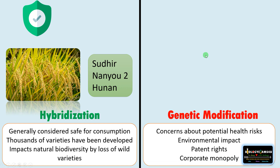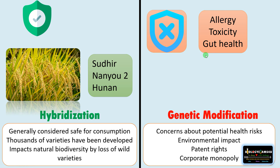Whereas for genetic modification, there are many concerns about potential health risks, including allergic reactions, toxicity, and gut health — specifically how natural gut bacteria respond to genetically modified food. Research is ongoing. There is also environmental impact: how genetically modified crops or organisms interact with other organisms, pollinators, or other varieties, and what happens during cross-pollination is not yet fully known. Most importantly, these are often produced by multinational companies with patent rights, leading to corporate monopoly that adversely affects the prospects of farmers. Many questions are yet to be answered regarding GMOs, and research is ongoing.